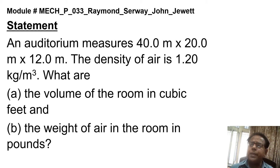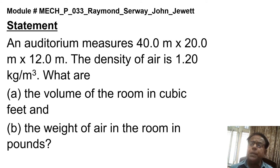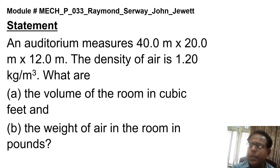The density of air is 1.20 kilograms per cubic meter. Part A asks for the volume of the room in cubic feet, and Part B asks for the weight of air in the room in pounds. We are bound to find that answer in pounds.